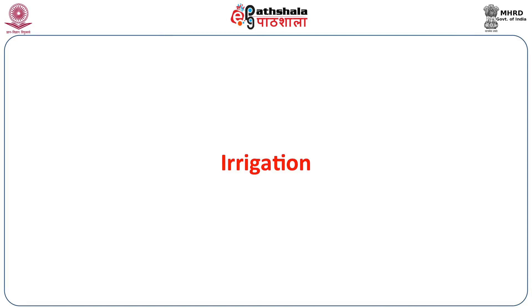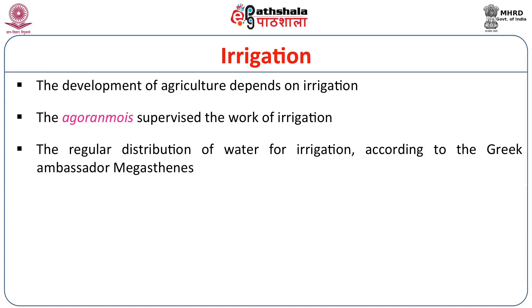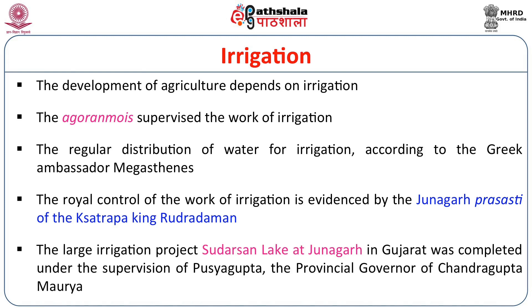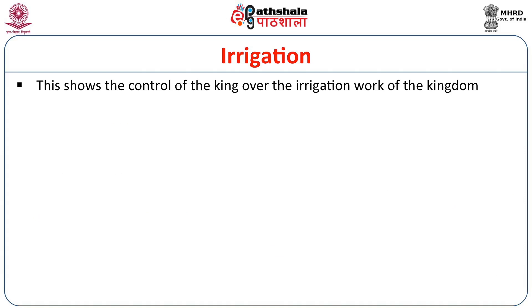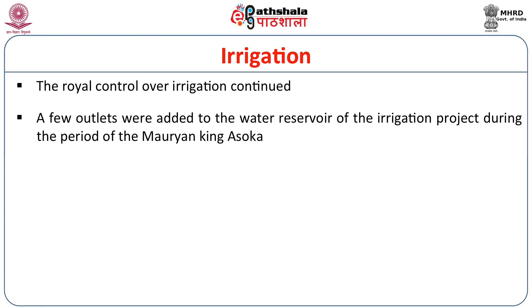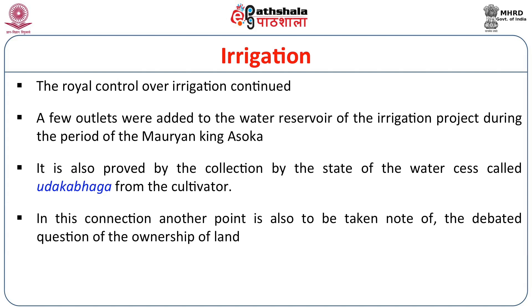Agricultural production was also facilitated by irrigation. The development of agriculture depends on irrigation. The Agronomoi supervised the work of irrigation. Regular distribution of water for irrigation is mentioned by the Greek ambassador Megasthenes. The royal control over irrigation is evidenced by the Junagarh Prashasti of the Kshatrapa king Rudradaman I. The large irrigation project — Sudarshana Lake at Junagarh in Gujarat — was completed under the supervision of Pushyagupta, provincial governor of Chandragupta Maurya. A few outlets were added to Sudarshana Lake during the period of Ashoka. This is proved by the collection of the water tax called Udakabhaga from the cultivator.